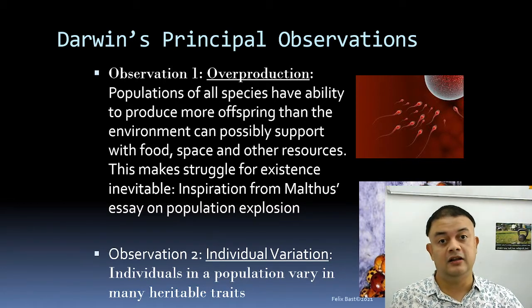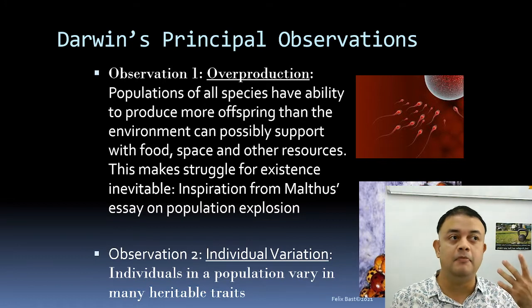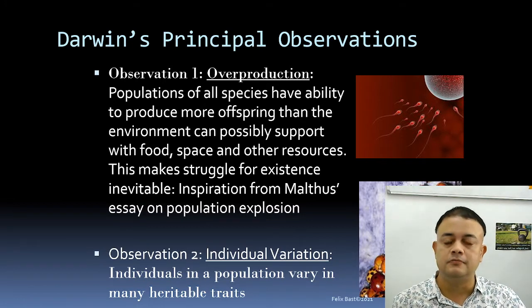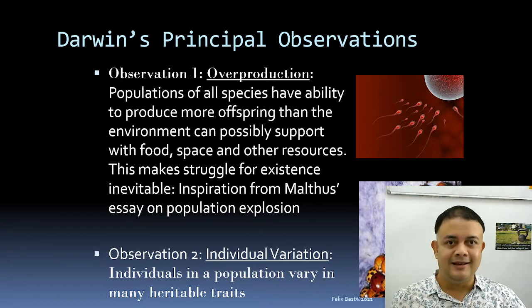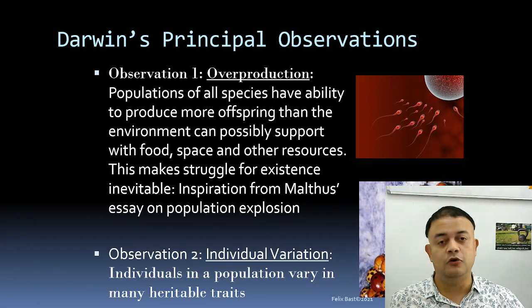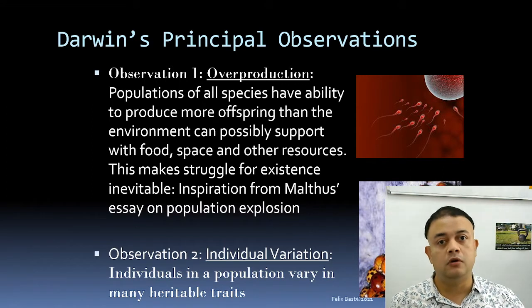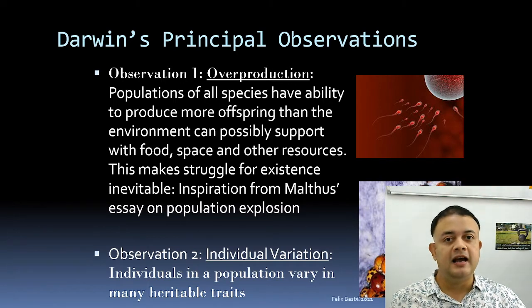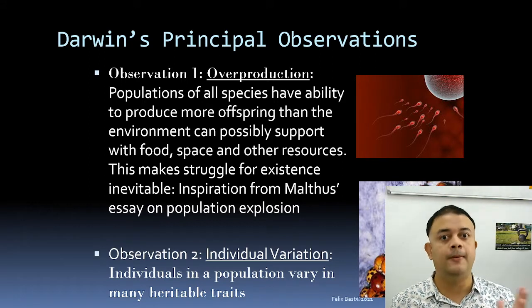The second observation is individual variation. Every person you come across is different — no two individuals have the same appearance. The same is true for any organism on earth. There is variation, and every individual is unique because variation is mostly due to random mutations. No one can control mutation, and nurture also plays a role — the environment and parental influence all matter.